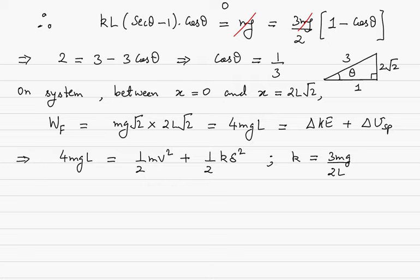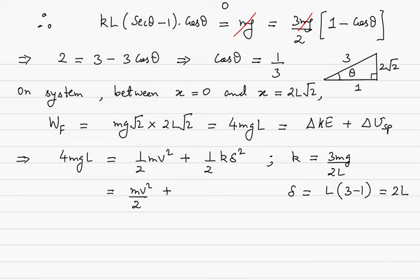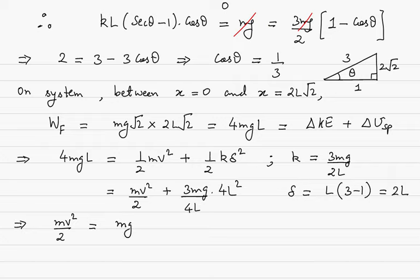So we have 4mgL on the left equals half mv squared plus 3mgL on the right. This gives mv squared equal to mgL, so the speed of the block at the instant of contact loss is square root of 2gL. This is the required answer.